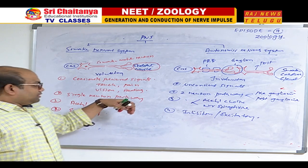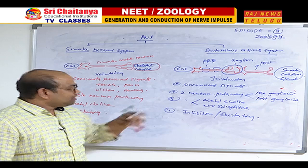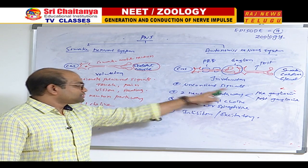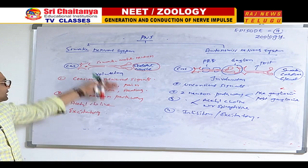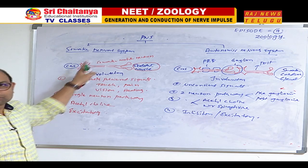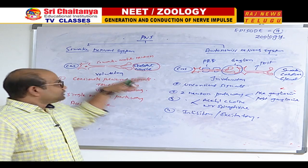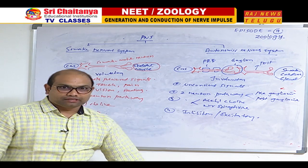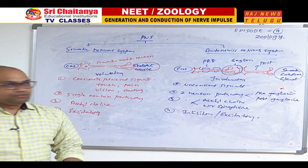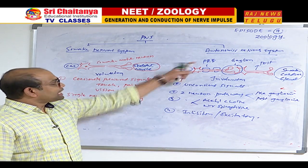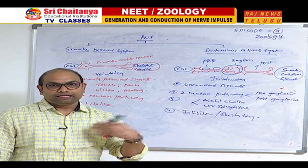The neurotransmitters of the autonomic nervous system are acetylcholine and norepinephrine. The autonomic system carries involuntary signals that are unconsciously perceived. The somatic nervous system carries consciously perceived senses like touch, pain, vision, and hearing to skeletal muscles, releasing acetylcholine as the neurotransmitter. In the next class, I will discuss the types of the autonomic nervous system and sensory perception. Thank you.